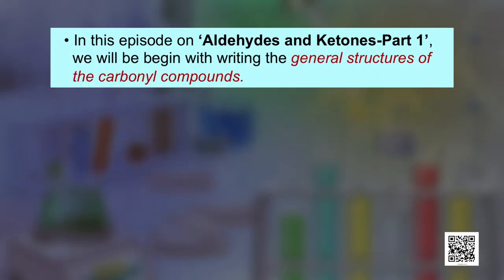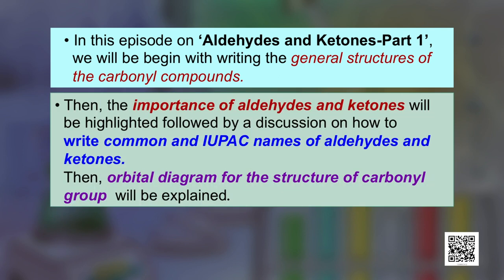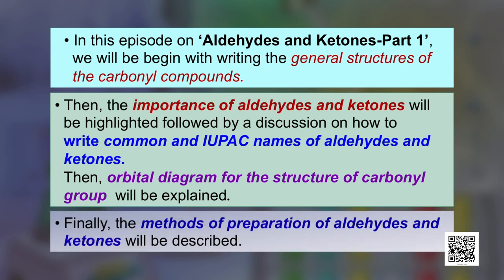In this session on aldehydes and ketones part 1, we will begin with writing the general structures of carbonyl compounds. Then the importance of aldehydes and ketones will be highlighted, followed by a discussion on how to write the common and IUPAC names of aldehydes and ketones. Then the orbital diagram for the structure of the carbonyl group will be explained. Finally, the methods of preparation of aldehydes and ketones will be described.